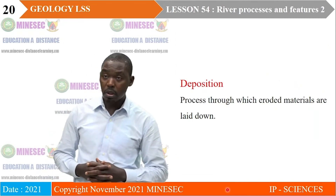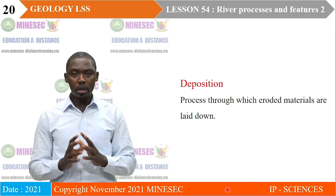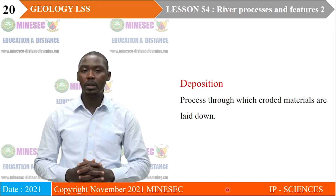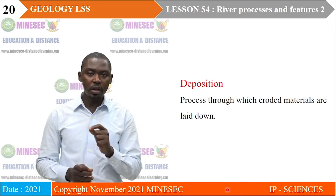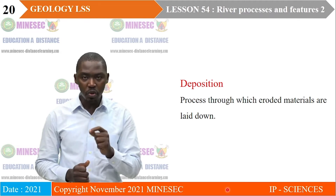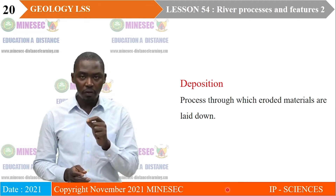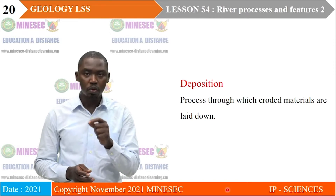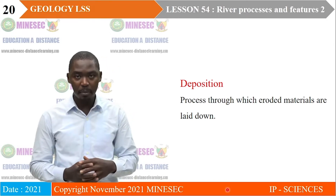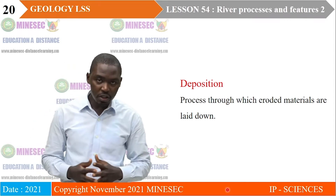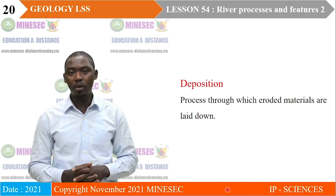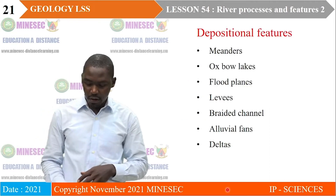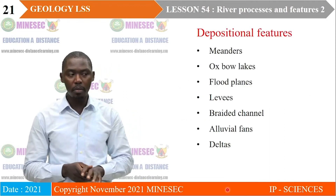We will now continue to deposition. Deposition is a process that involves the laying down of those particles whose movement we have just described. Deposition takes place when the river's velocity reduces. This reduction in velocity can come as a result of a reduction in gradient, or as a result of friction towards the banks and nearer the river bed. When velocity reduces, these sediments are laid down in various ways to produce different landforms.